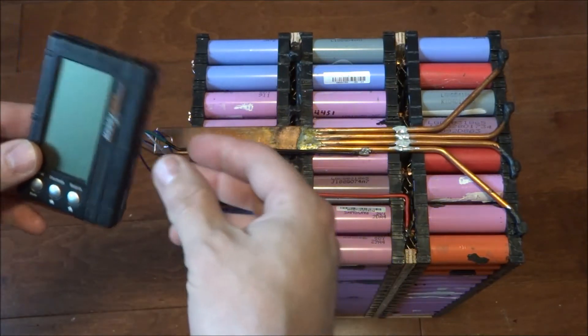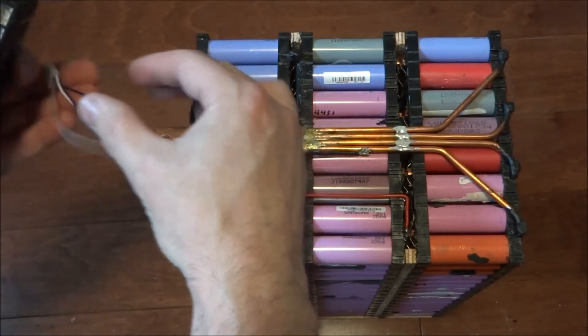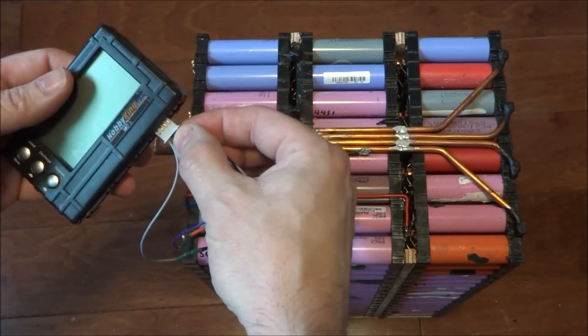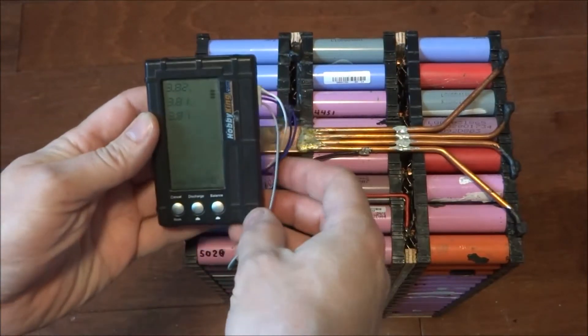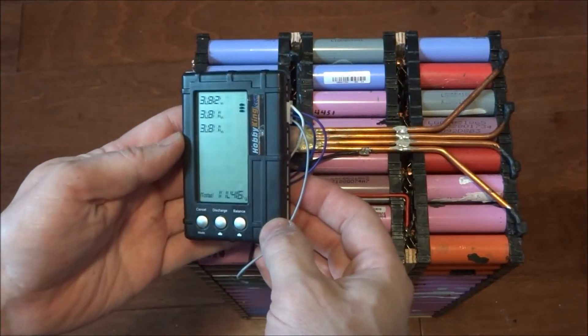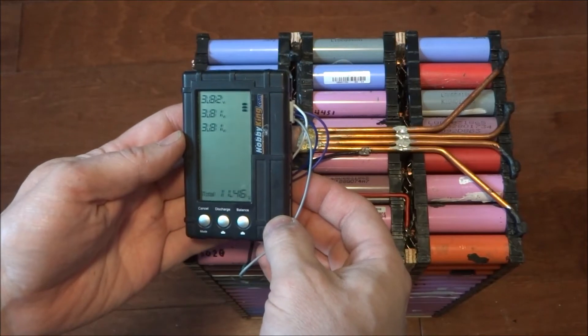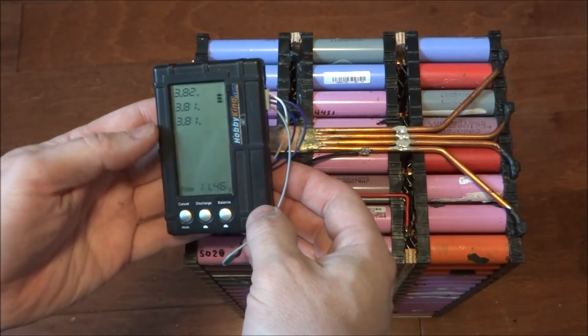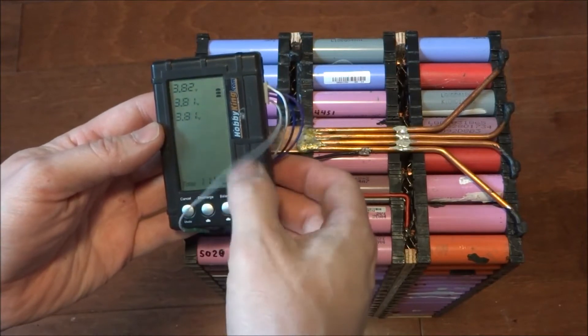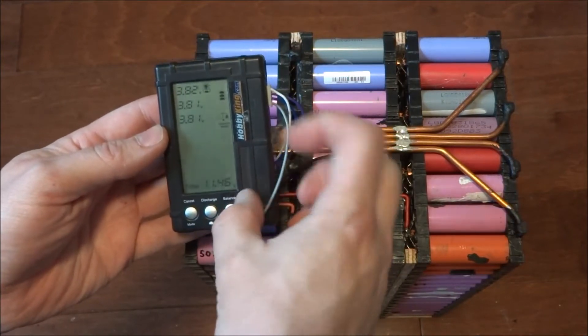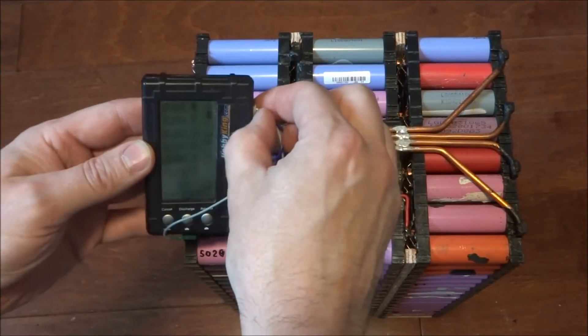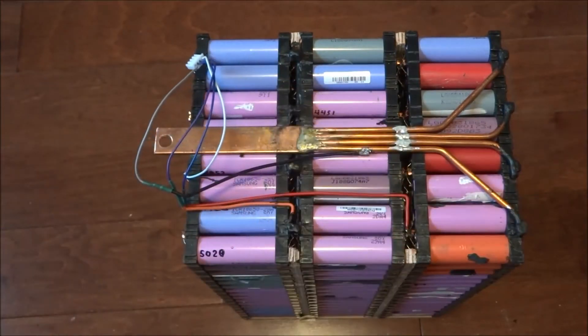Using this little Hobby King balance gauge, let's see how it looks. We have 3.82, 3.81, and 3.81. That's pretty good. I can just set that to balance and it'll discharge the top one until it meets the other ones.